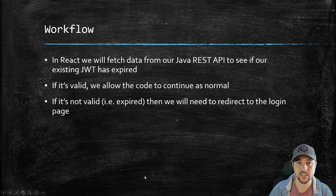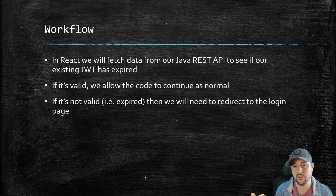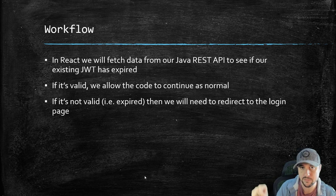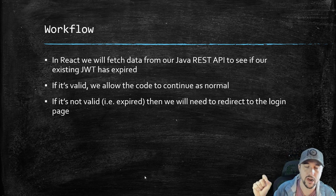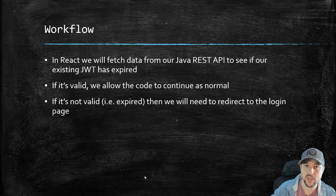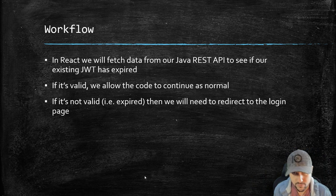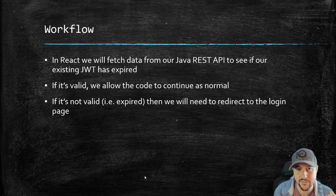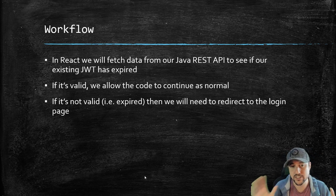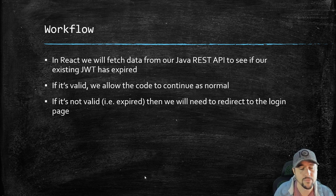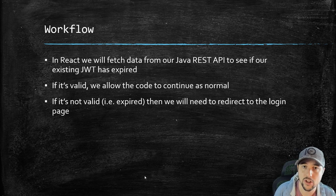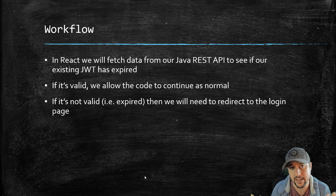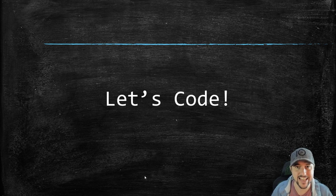Here's how the workflow will shake out. In React, we're going to expand on that private route component. We will fetch data from our back end from the Java REST API and check to see if our token is expired or not. We'll pass in a token, and it will give us a response saying if it's expired. If it's valid, we let the code continue as normal. If the token is expired, we redirect to a login page so the person can re-login.